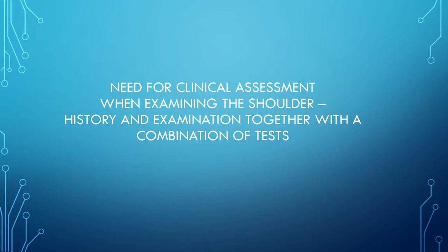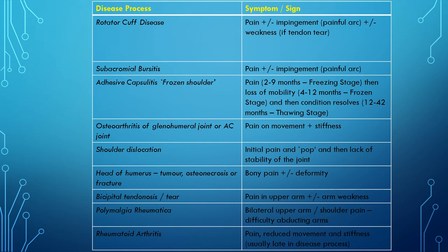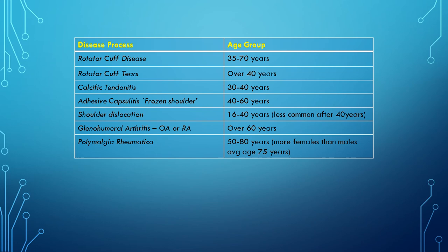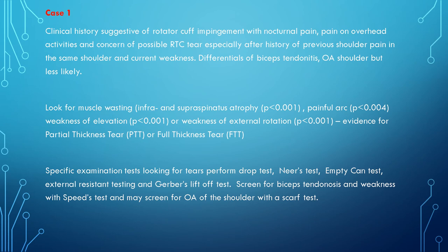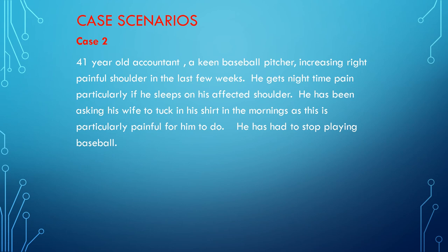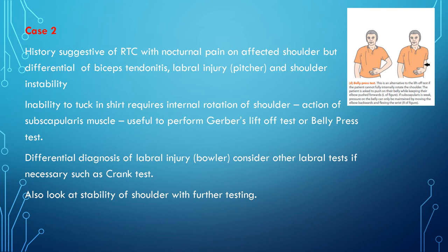When looking at a shoulder, part of the clinical picture is also to consider the patient's age. To bring everything together, I'll present two different case scenarios. In the first case, the clinical history is suggestive of a rotator cuff impingement. In case two, a 41-year-old accountant presents — and again the history is suggestive of a rotator cuff injury.